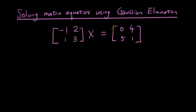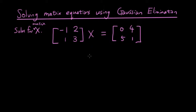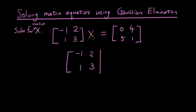So here is our matrix equation and what we want to do is we want to solve for x. We want to find out what matrix x equals — solve for matrix x. Using Gaussian elimination, the first thing we do is we write an augmented matrix with a solid straight line in the middle, so we skip writing x and then we write the matrix on the right.